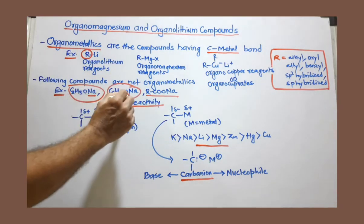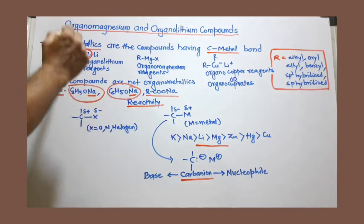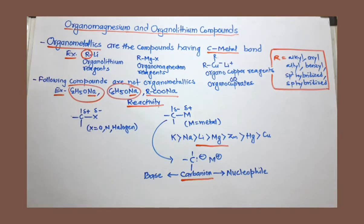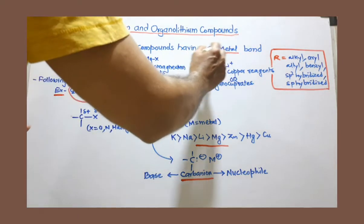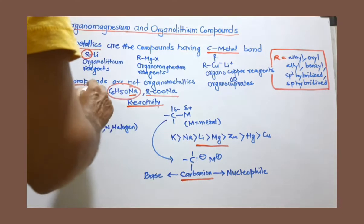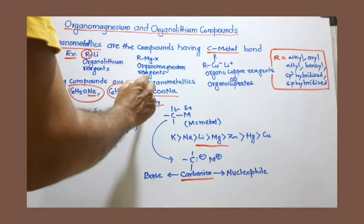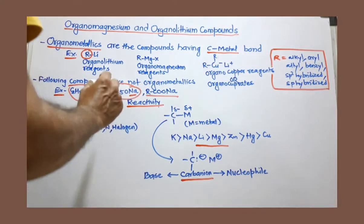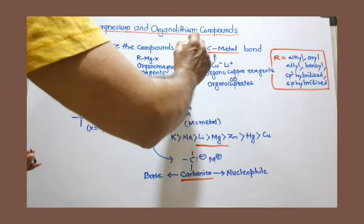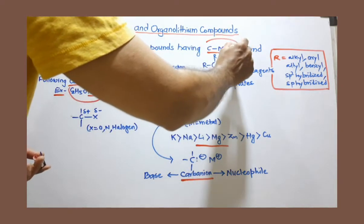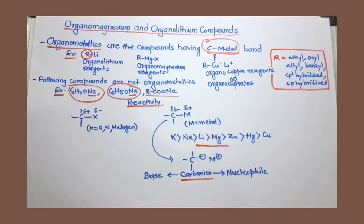they are also metal, but they are not considered as organometallics, because when you see their structure, there is no carbon-metal direct bonding. So although these compounds are in metal or metal ion, they are not considered as organometallics, because there is no carbon-metal bond. So what is important? Carbon-metal bond should be there.